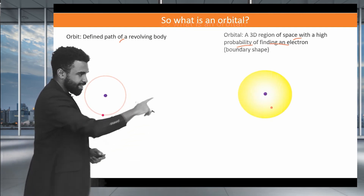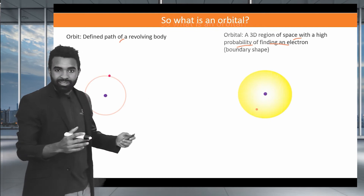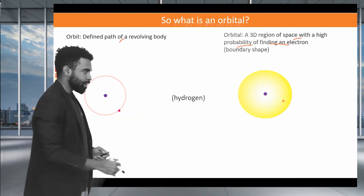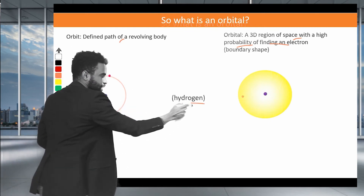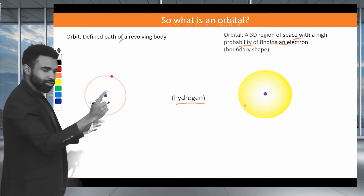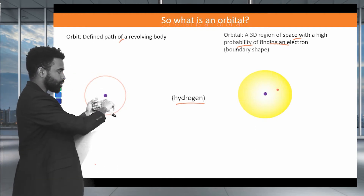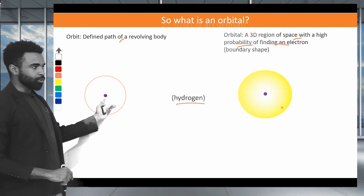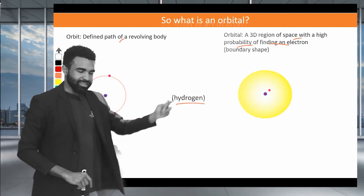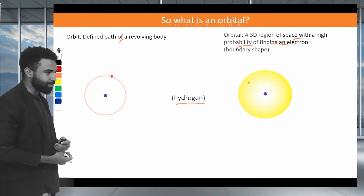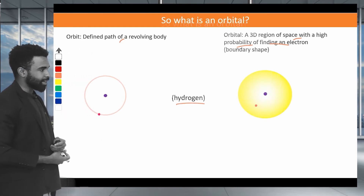A 3D region of space where you have a high probability of finding an electron is what an orbital is. The 1s orbital looks like a sphere — this is what hydrogen looks like in the quantum mechanical model, with just a nucleus and an electron cloud rather than a defined orbit.